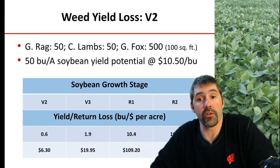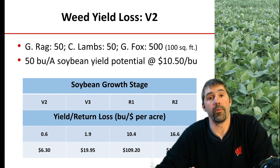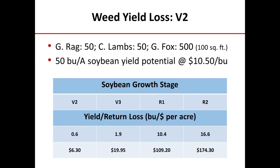One interesting thing we can look at is yield loss data from a typical V2 operation. If we went out and did some plant stand counts for giant ragweed, common lambsquarters, and giant foxtail, factoring in about a 50 bushel per acre soybean yield potential at a commodity price of $10.50 per bushel, we can see that just moving from V2 to V3 growth stage there is a $13 penalty to growers by waiting that one week in timing. That's how critical that early season weed competition is when you don't get that application out in a timely manner.